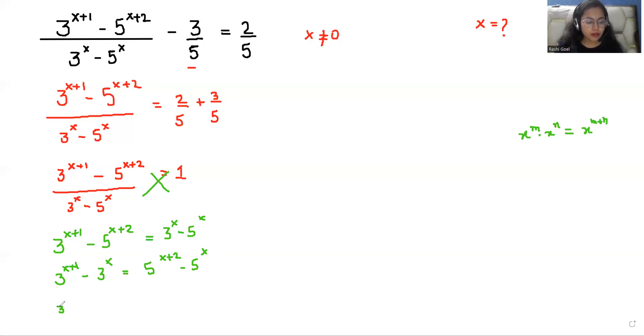3 power x. We can break it at plus 1 as 3 power x times 3 minus 3 power x. Similarly, 5 power x times 5 power 2 minus 5 power x.